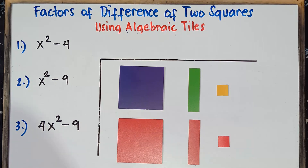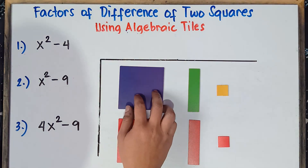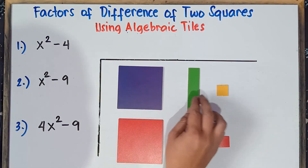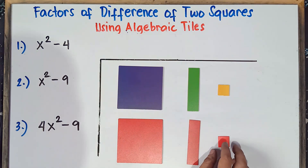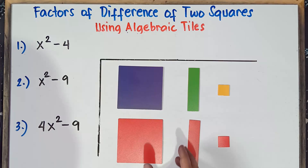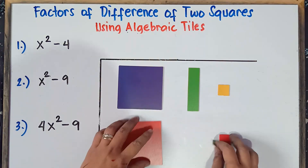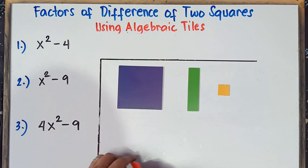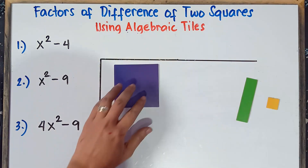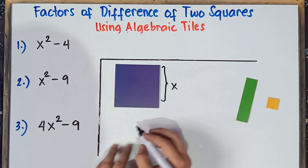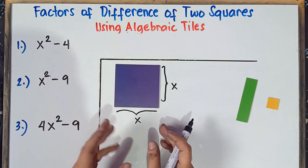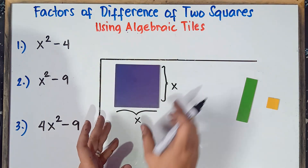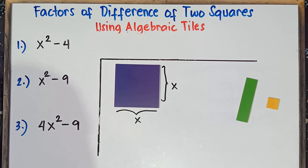Before I proceed to our examples, I have here some following algebraic tiles. This is x squared, this is positive x, and this will be positive 1. This is negative x squared, this is negative x, and this will be negative 1. Let me explain this. We call this one x squared because the length is x and the width is x. To get the area, simply multiply the length and the width — x times x — that would be x squared.